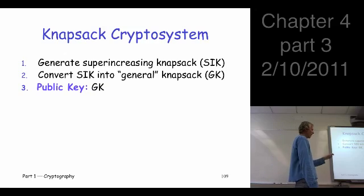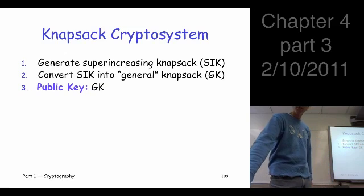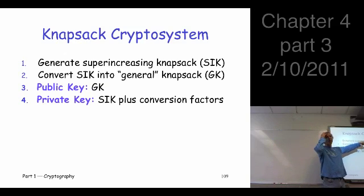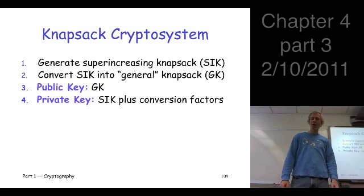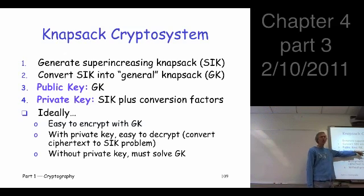And then the public key is going to be the general knapsack. Using the public key, it's actually easy to encrypt. So Trudy, easy to encrypt using that. The private key is going to be this guy that we started with, the super-increasing knapsack, plus something about the conversion, so that we can convert sort of back and forth. Now, given the super-increasing guy, it's easy to decrypt, because you can convert it back sort of to that case. But given just this guy, you're left with that horrible NP-complete general knapsack problem. At least that's the hope.